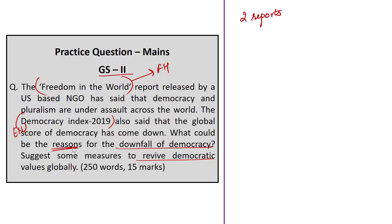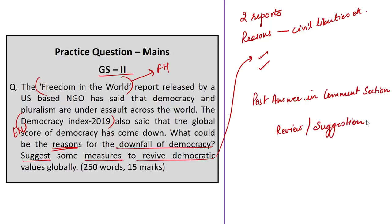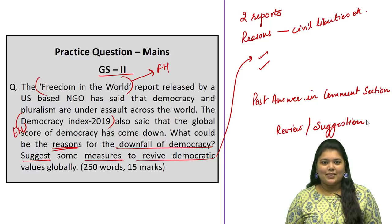For the reasons for the downfall of democracy, you can mention decline in civil liberties including media freedom and freedom of speech. For measures to revive democratic values, mention points like respecting, protecting, and fulfilling human rights, and emphasizing democracy-strengthening programs in foreign assistance. Post your answers in the comment section — we will review them and provide suggestions in a reasonable time. This brings us to the end of today's Hindu news analysis. If you like the video, don't forget to like, comment, and share, and subscribe to Shankar IAS Academy YouTube channel.